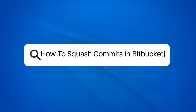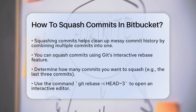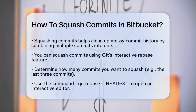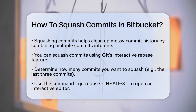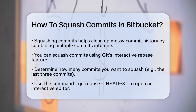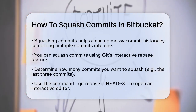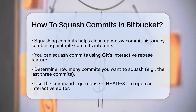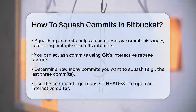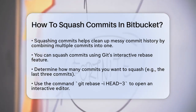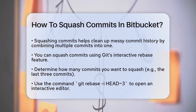How to squash commits in Bitbucket. If you're working on a project and your commit history is getting a bit messy, you might be wondering how to squash those commits in Bitbucket. Let's break it down step by step. First, you need to understand what squashing commits means. Essentially, it's a way to combine multiple commits into a single commit, making your commit history cleaner and more manageable.